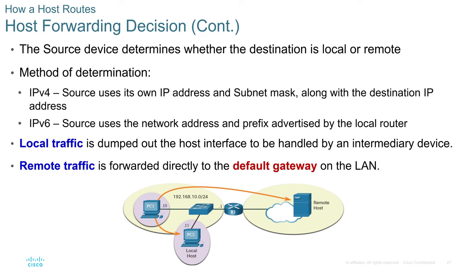The source device determines whether the destination is local or remote. In IPv4, the source uses its own IP address and subnet mask along with the destination IP address. In IPv6, the source uses the network address and prefix advertised by the local router. Local traffic is handled by an intermediary device; remote traffic is forwarded directly to the default gateway on the LAN.